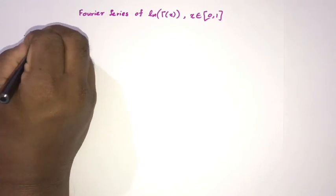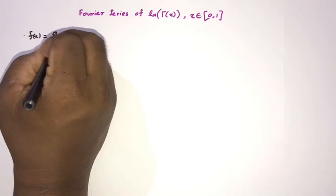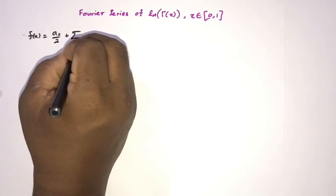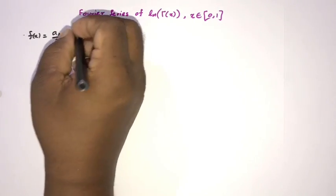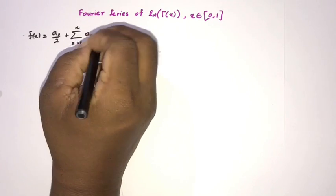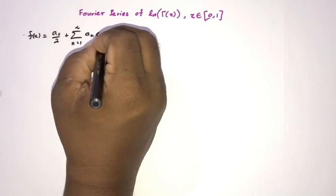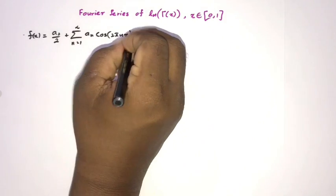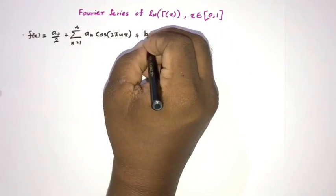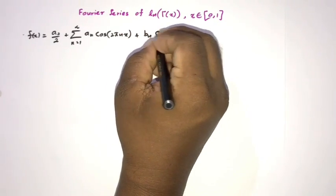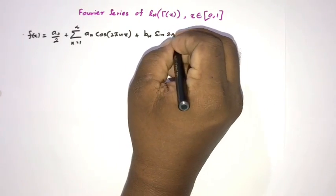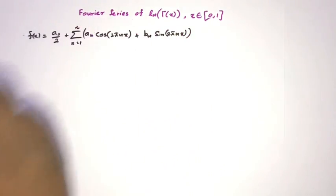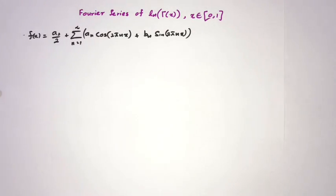Let's begin. The general Fourier series formula is: f(x) = a₀/2 plus the infinite sum from n=1 to infinity of aₙ·cos(2πnx) plus bₙ·sin(2πnx).